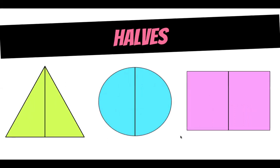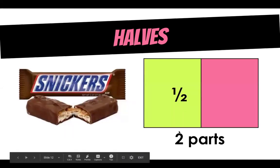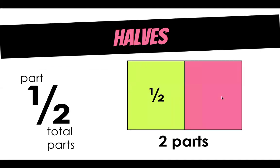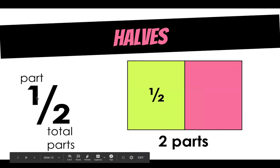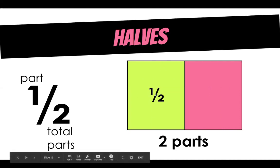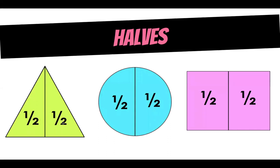Now, halves. Halves have been broken up. How many parts has a half been broken into? Two parts. As you can see, our Snickers was broken in half into two equal parts — we have one half and one half. The two shows we have two total parts, and one half shows that this is just one part of the two total parts. You can see that with all of our shapes — each shape shows one part of the two.